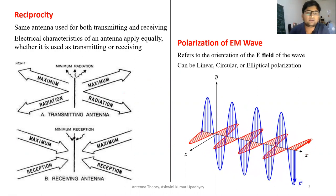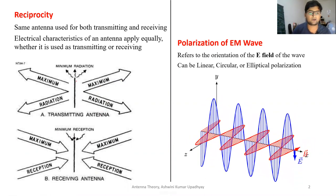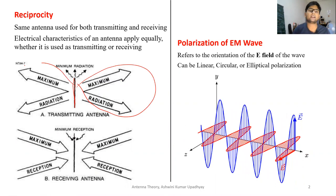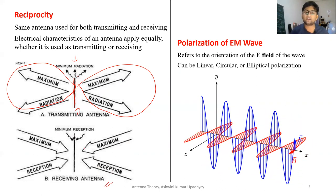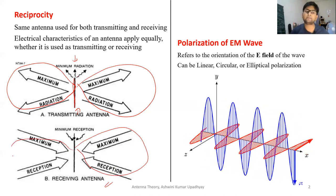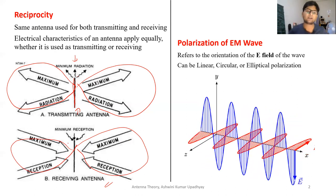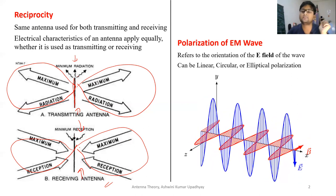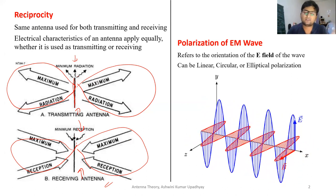In this diagram, if you are having one antenna — this straight line is the antenna — if this antenna has maximum radiation in this direction and minimum radiation in other directions, then when this antenna is working as a receiver, it will have maximum reception of EM waves in the same direction as it was radiating when it was a transmitter, and minimum reception in the other directions.